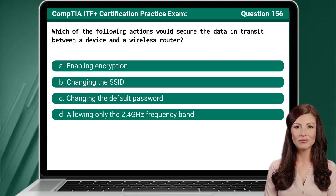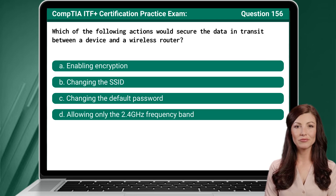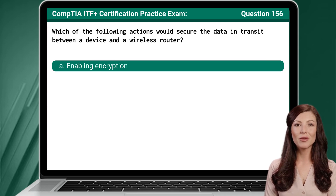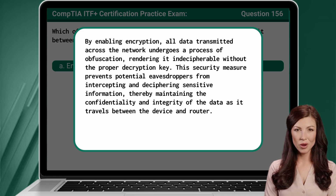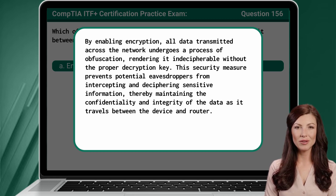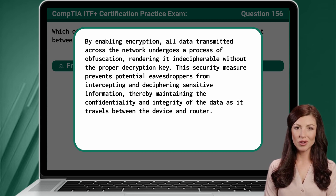Question 156. Which of the following actions would secure the data in transit between a device and a wireless router? The answer is A: enabling encryption. By enabling encryption, all data transmitted across the network undergoes a process of obfuscation, rendering it indecipherable without the proper decryption key. This security measure prevents potential eavesdroppers from intercepting and deciphering sensitive information, thereby maintaining the confidentiality and integrity of the data as it travels between the device and router.